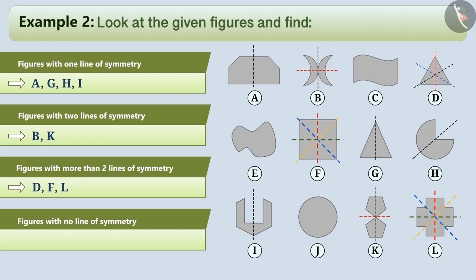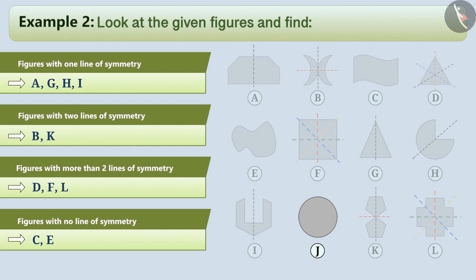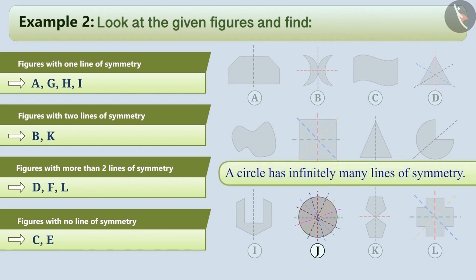If we look at it, then we can say that figures C and E have no lines of symmetry. Because there can be many lines passing through the center of a circle, we can say that a circle has infinitely many lines of symmetry.